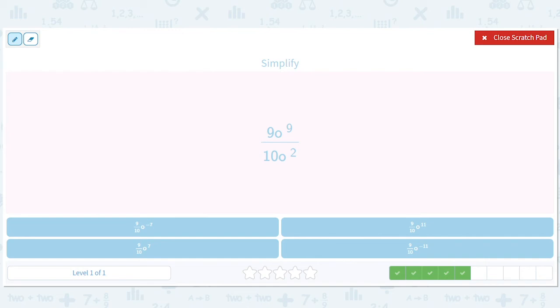Okay. Now don't get tricked. These are just the letter o. They're not zeros. So this is o to the 9 minus 2, or o to the 7. And this is 9 tenths. So we have 9 tenths, o to the 7.